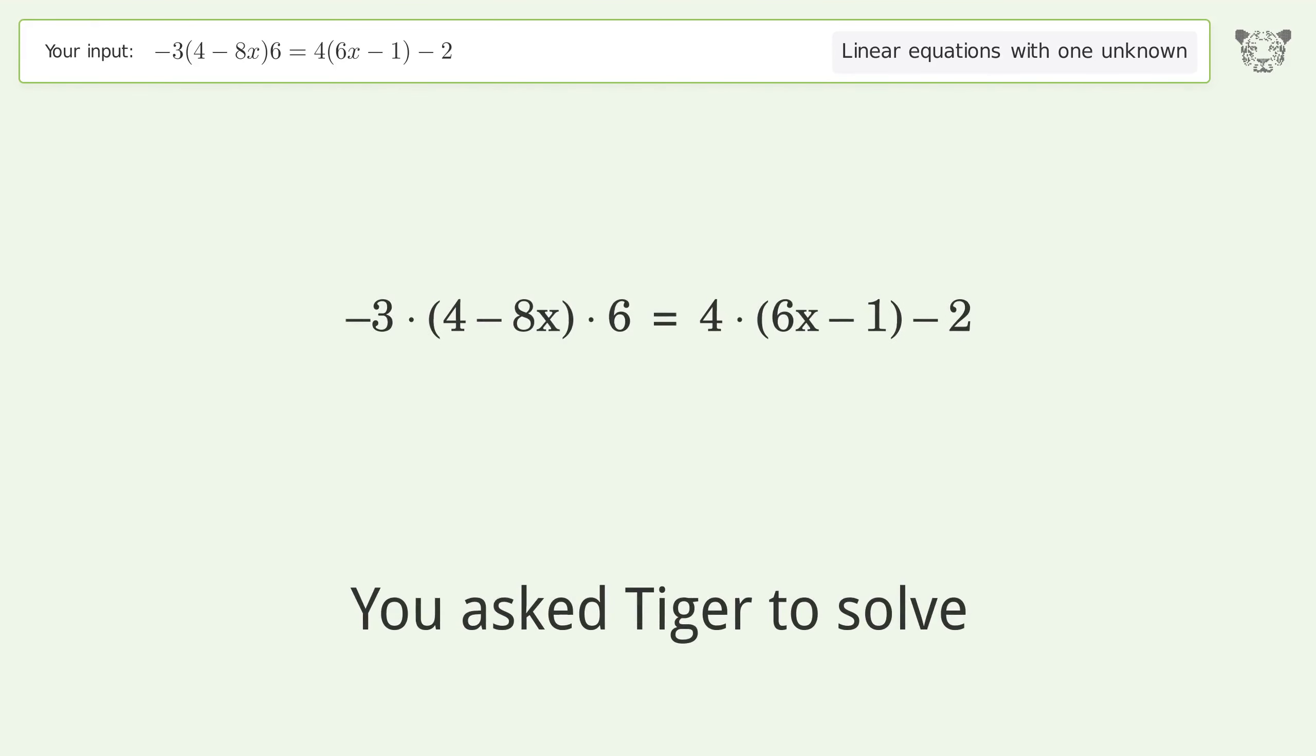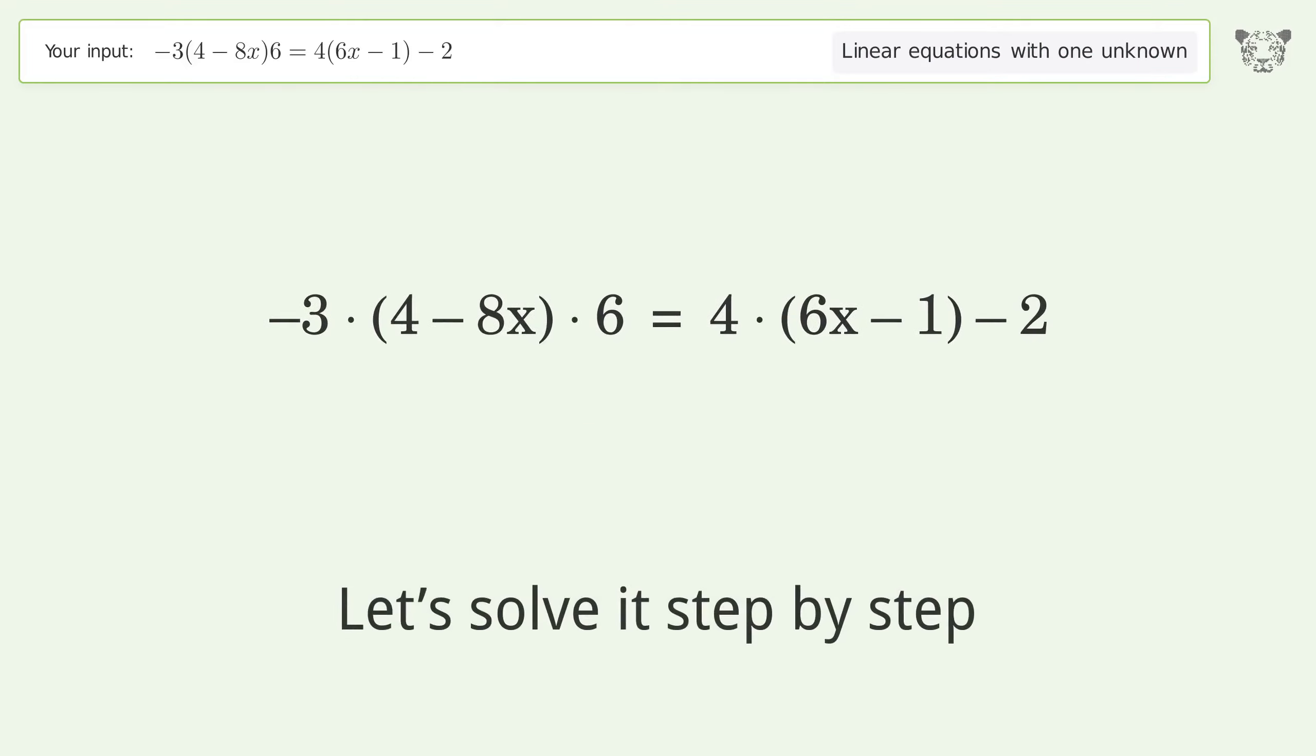You ask Tiger to solve this linear equation with one unknown. The final result is x equals 11 over 20. Let's solve it step by step.